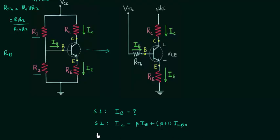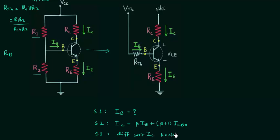In step three, the final step, we differentiate this equation with respect to Ic, keeping β and input voltage Vbe constant.